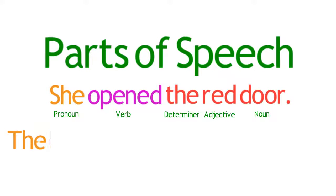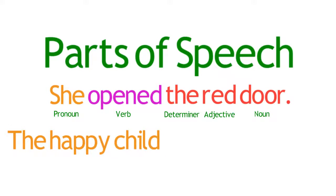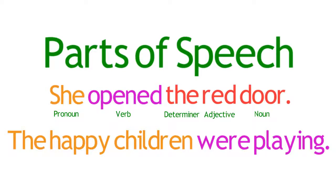As another example, in this sentence, the subject is a noun phrase consisting of a determiner, an adjective, and a noun. And the verb is a compound verb consisting of two individual verbs. As you can see, every word in this sentence has a part of speech that helps to explain how that word relates to the sentence as a whole.